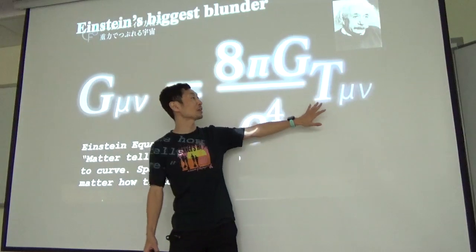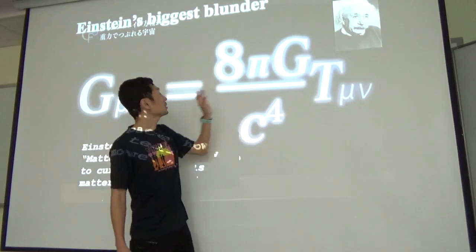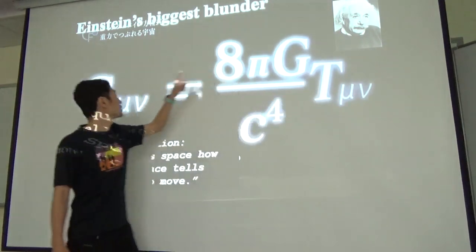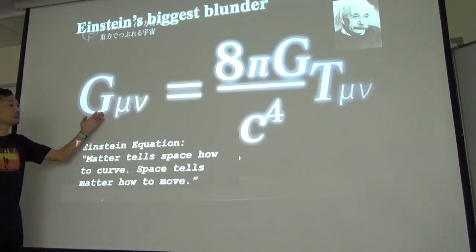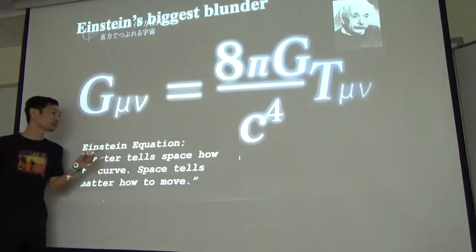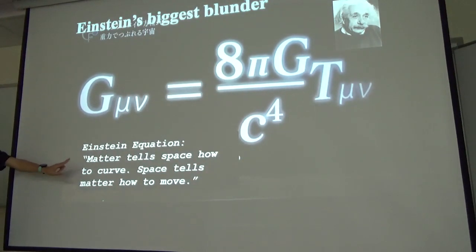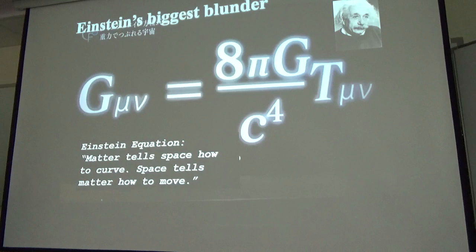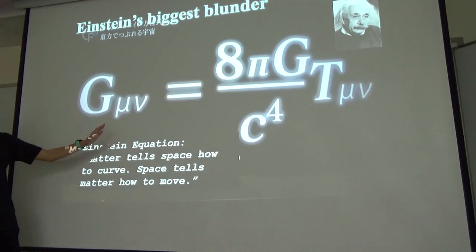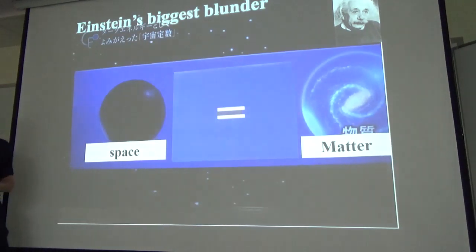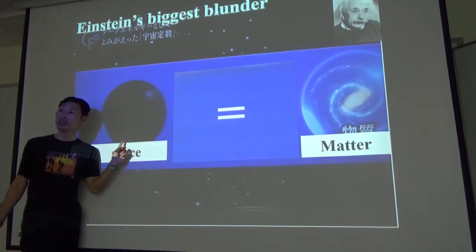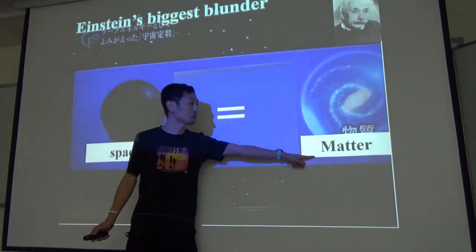But basically let's call it the mass. So Einstein's biggest blunder: mass is going to tell space how to curve, and then space is going to tell matter how to move. I wrote down here: matter tells space how to curve, space tells matter how to move. So I can make this a more simplified version. So this is easy, right? That is matter.